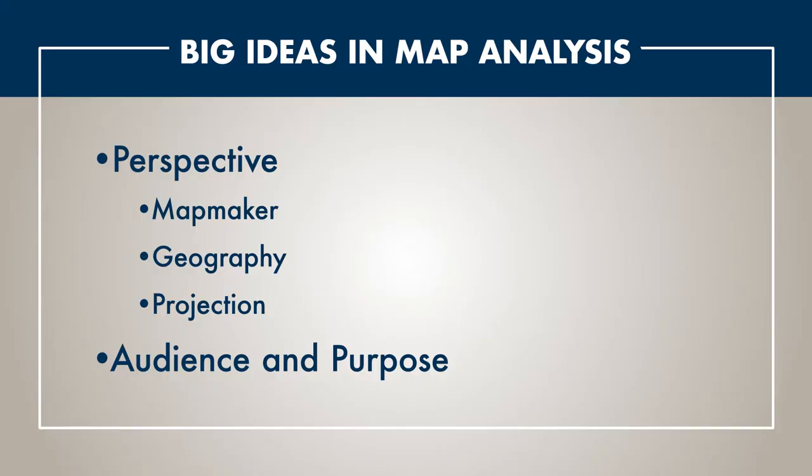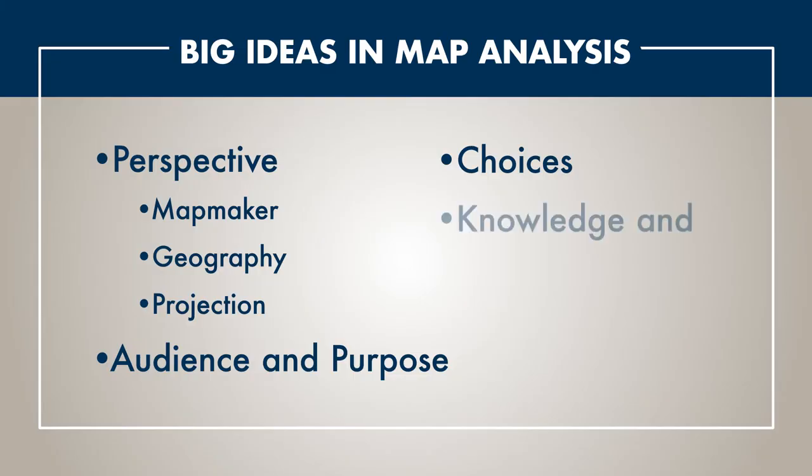The third big idea would be choices. How does the map maker's perspective affect the things that they put on the map — the decorations, how much of the earth they show, how much of the land, what places they show? All of those parts are very important to thinking about the map at a deeper level.